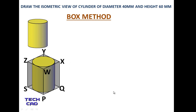First of all you have to make a reference line. Select any point — this is point P. Now make a line PQ, and the dimension of PQ is whatever the diameter of your cylinder is. As you can see, the PQ line and PS line exactly touch the circumference of the cylinder. So whatever the diameter of the cylinder is, that should be the dimension of PQ and PS.